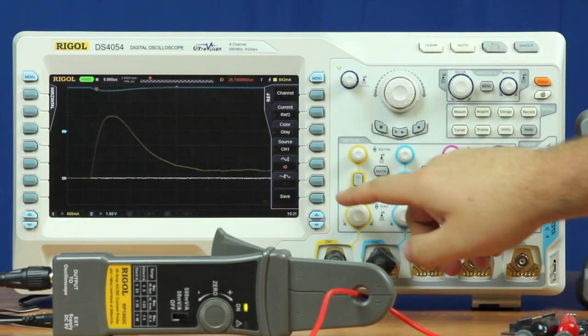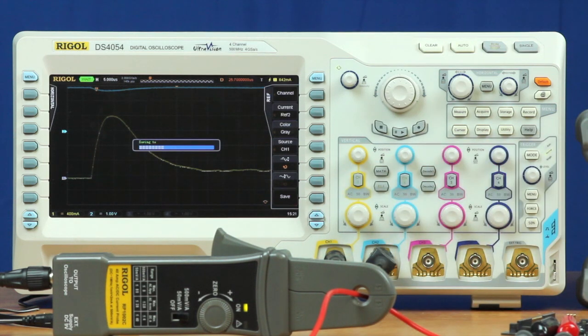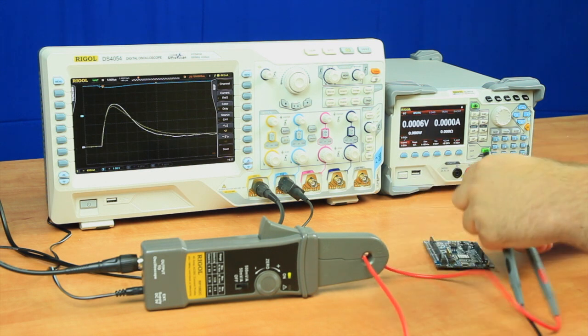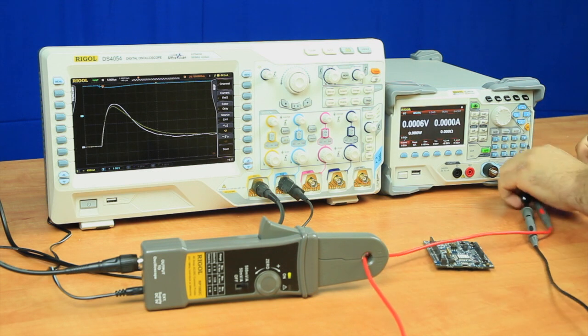Now that we know what this looks like, I'm going to hit save to save a reference. I'm going to remove the probes off the IoT board and hook them up directly to the load.